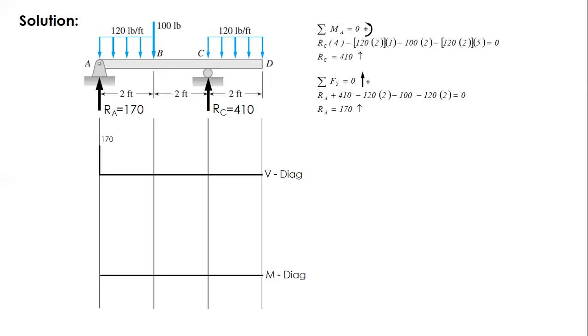At A there is a force of 170 upward. So we go straight line upward to 170. And then for segment AB, uniform distributed load. The area is 240, 120 times 2, downward, so negative. So 170 minus 240, you'll have negative 70. That would be the shear at B. The diagram is a straight line. And then at B, concentrated load of 100 downward, negative 70 minus 100, negative 170. And then between B and C, there's no load. If there's no load in the segment, your shear diagram is just a horizontal line.